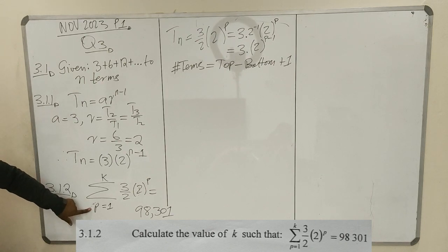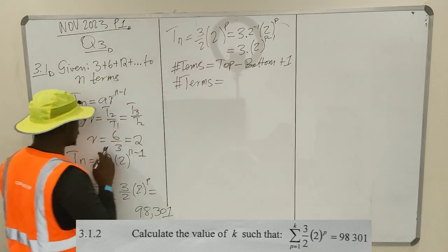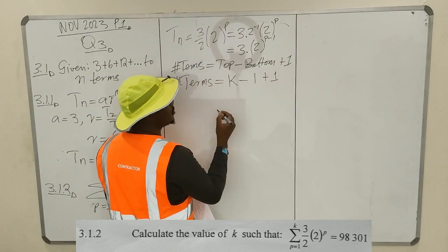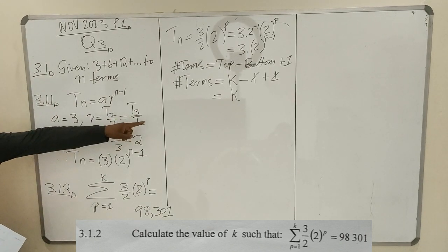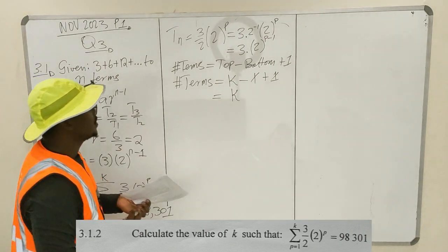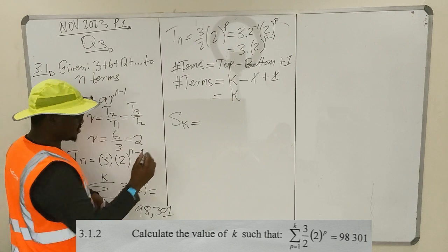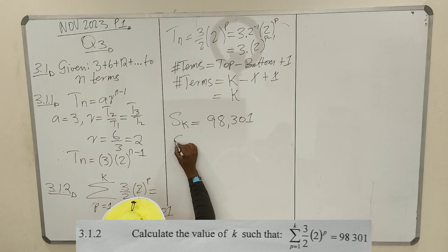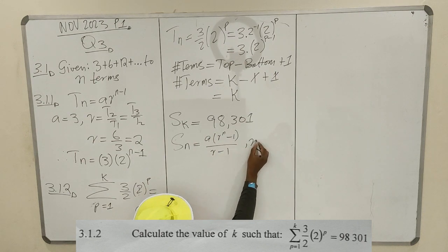So you must find the sum of K terms in order to find the value of K. The sum of K terms should equal 98,301. The sum formula for a geometric series is S = A(R^n − 1) / (R − 1), where R is not equal to 1.